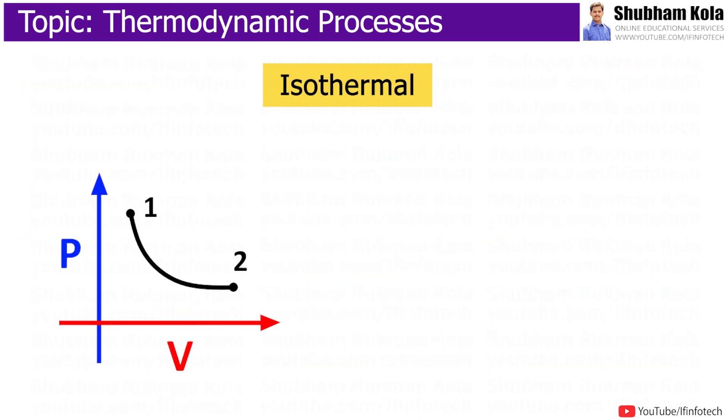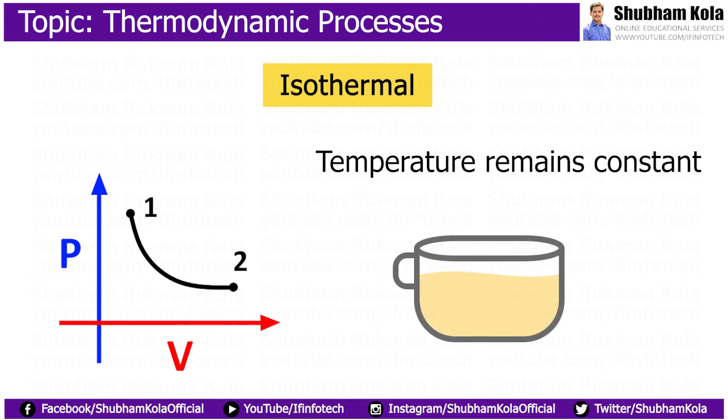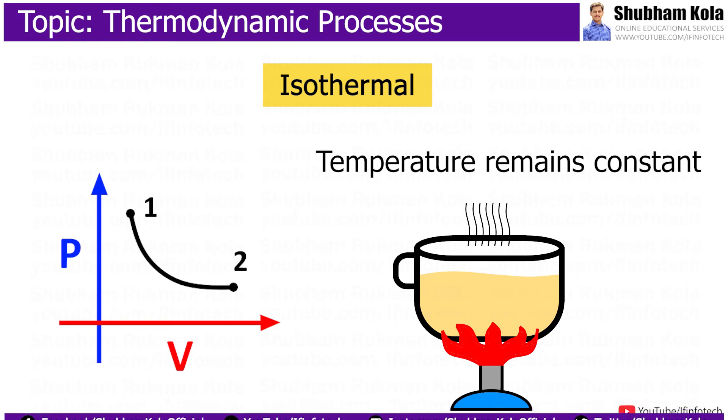Now, in isothermal process, the temperature of system remains constant. This process occurs when system is in contact with outside thermal reservoir and change in system will occur slowly to allow the system to continue to adjust to temperature of reservoir through heat exchange.